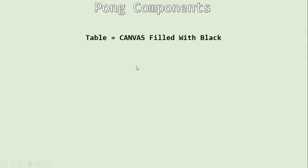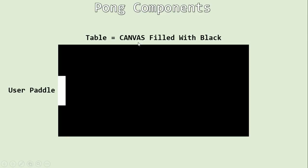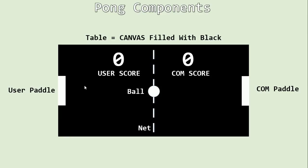Now let's talk about the game components. We have a table, which is a canvas filled with black. Then two rectangles — the computer and user paddles. Then a net in the middle of the canvas. Then the ball, and the scores of the user and computer. Let's go and create these components.